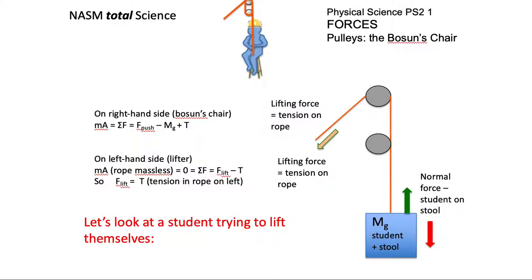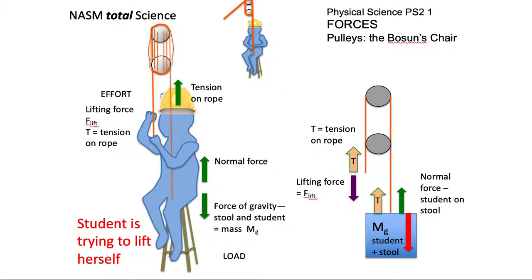Suppose we look at a student trying to lift themselves up. So instead of having the force effort on the left, the same student is going to pull downwards on the force to lift themselves up. The force of gravity on the student and stool is mg. You've got the lift force and the tension.